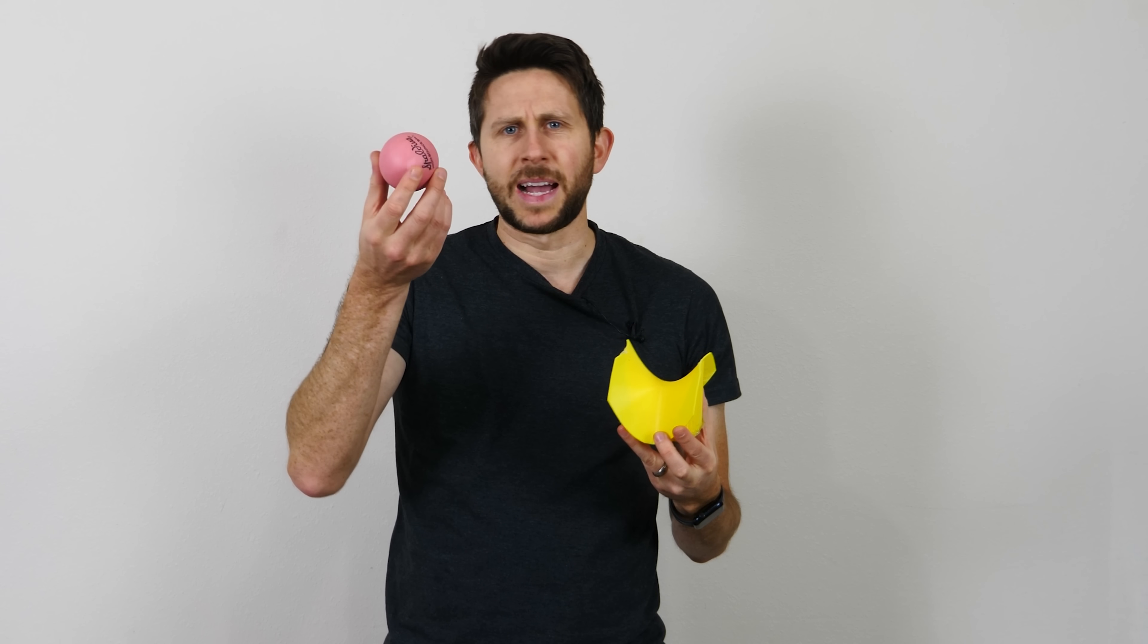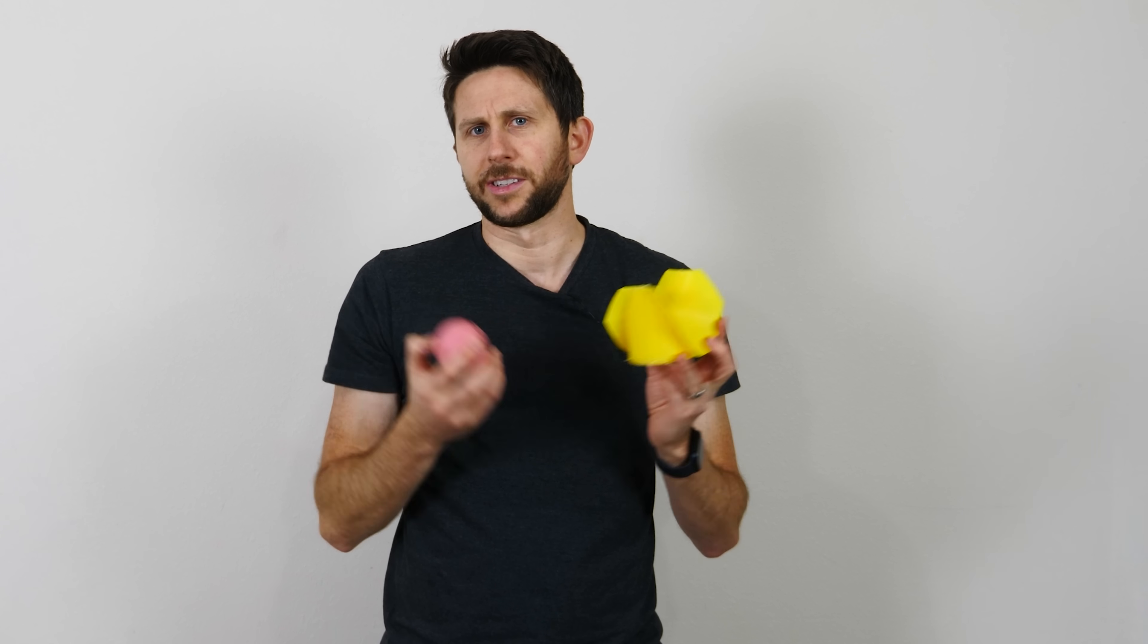In order to do this you need a saddle shape like this. You can 3D print it or you can make one. The radius of the saddle shape has to be the same order of magnitude as the radius of whatever ball you use.